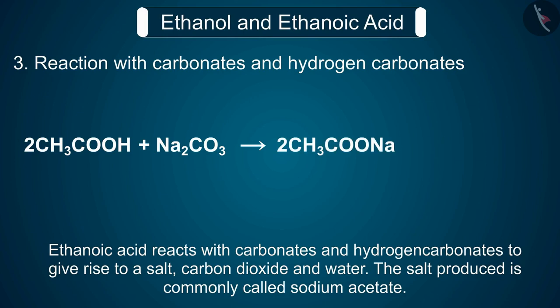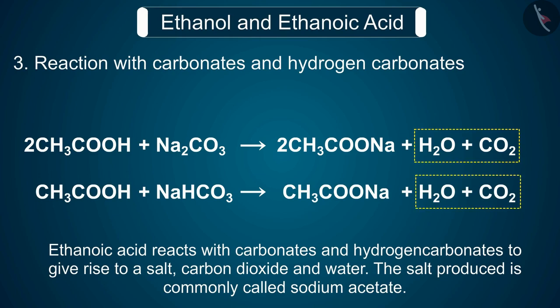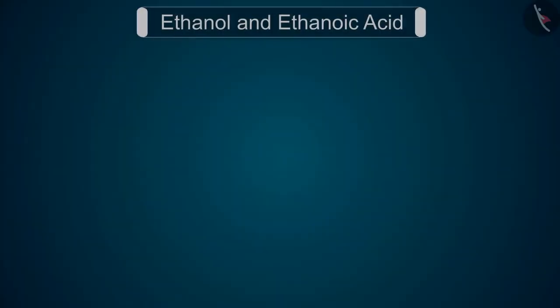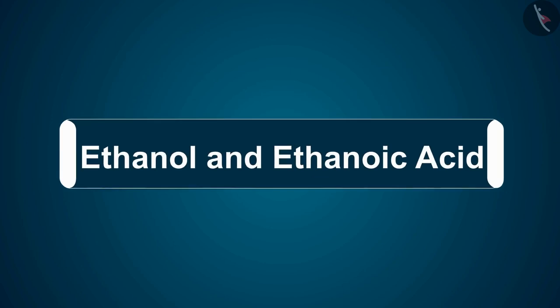Reaction 3: reaction with carbonates and hydrogen carbonates. Ethanoic acid reacts with carbonates and hydrogen carbonates to give rise to a salt, carbon dioxide, and water. The salt produced is commonly called sodium acetate. This was all about the physical and chemical properties of ethanoic acid and ethanol. Friends, in this video we studied about ethanol and ethanoic acid.